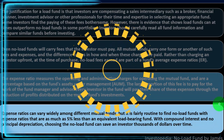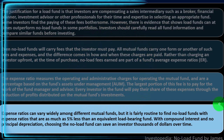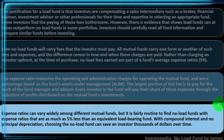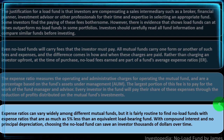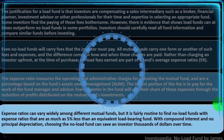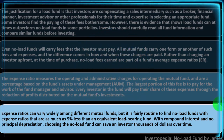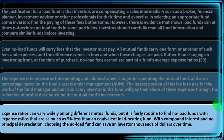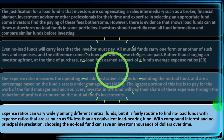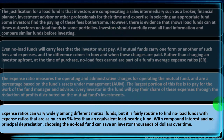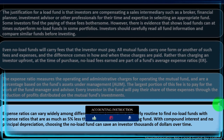Expense ratios can vary widely among different mutual funds, but it is fairly routine to find no-load funds with expense ratios that are as much as 5% less than an equivalent load-bearing fund. With compound interest and no principal depreciation, choosing the no-load fund can save an investor thousands of dollars over time.